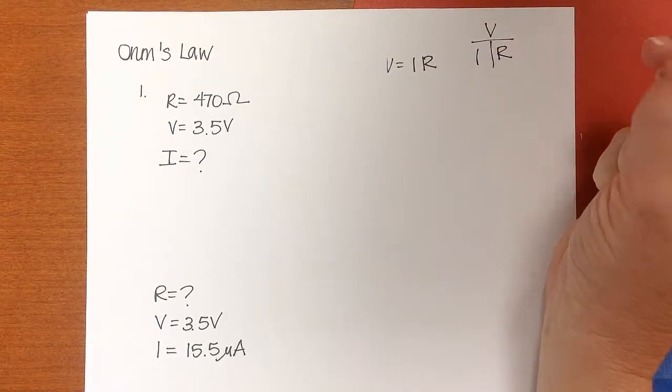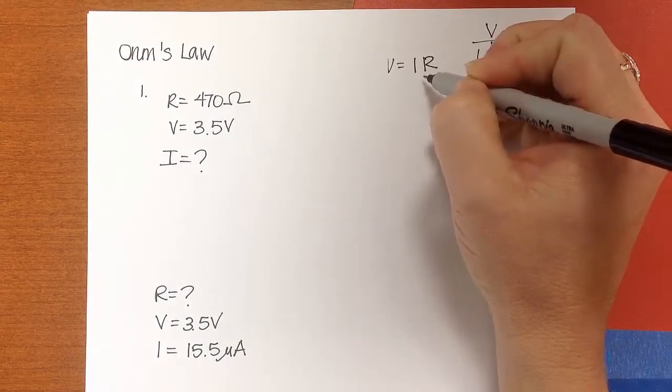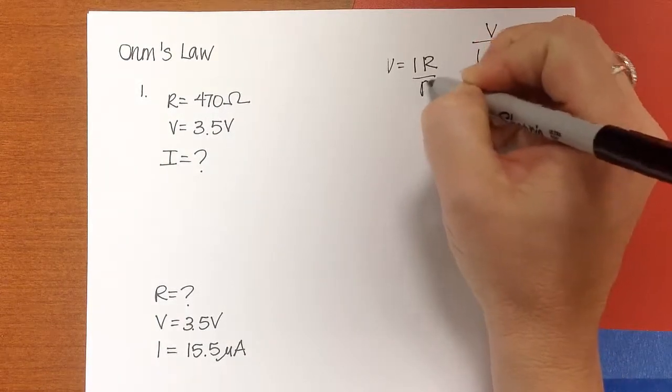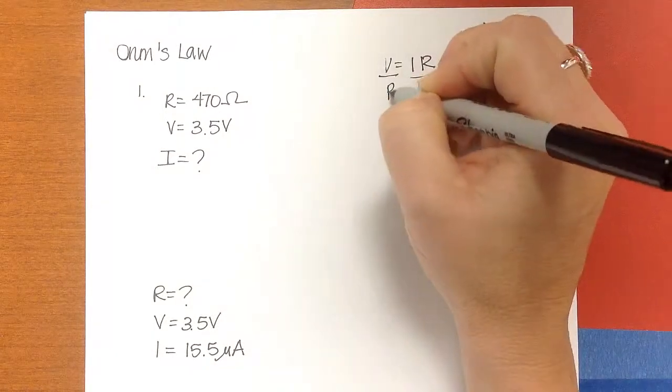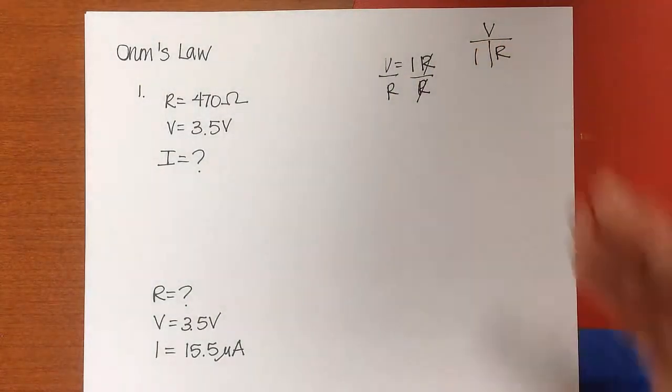If we want to know I, if we solve this equation for I, we have to divide both sides by R, the R cancels, and we have I equals V over R.